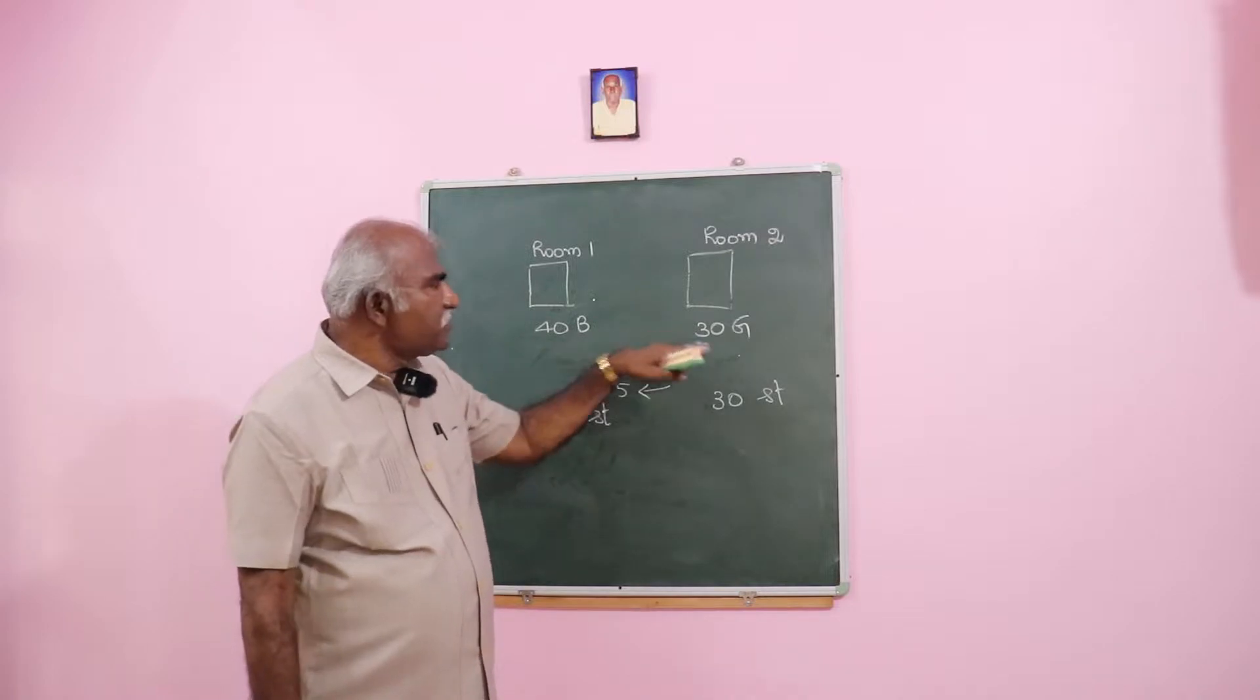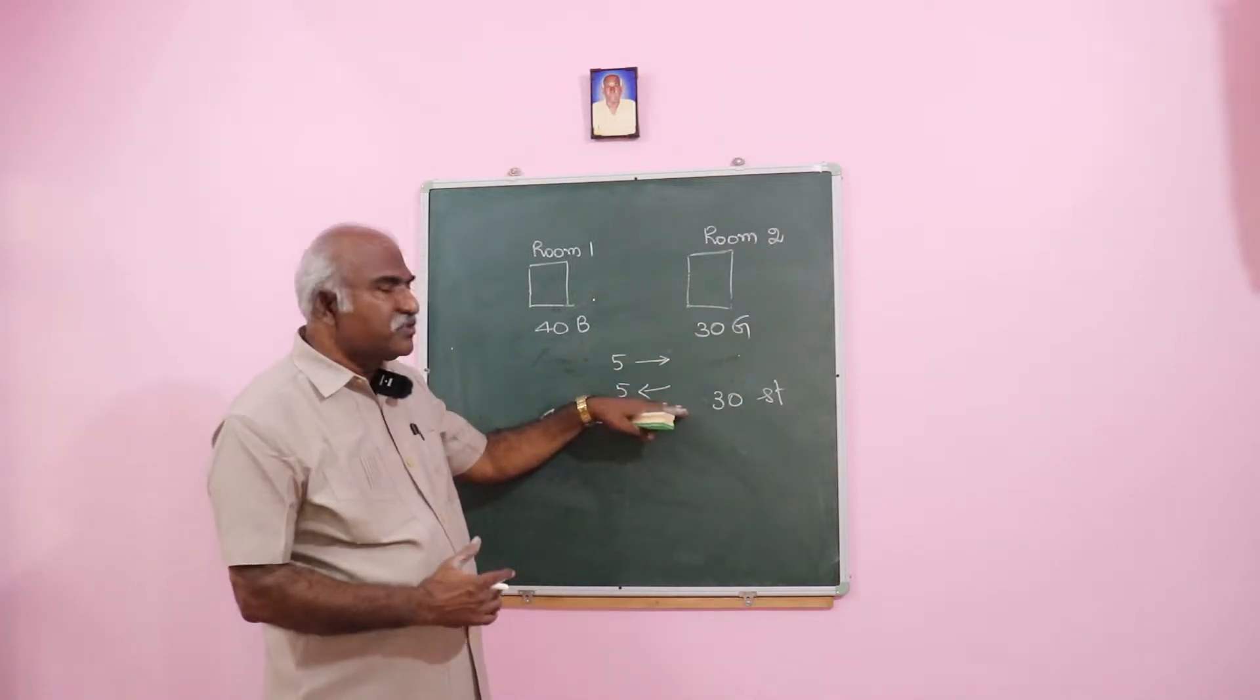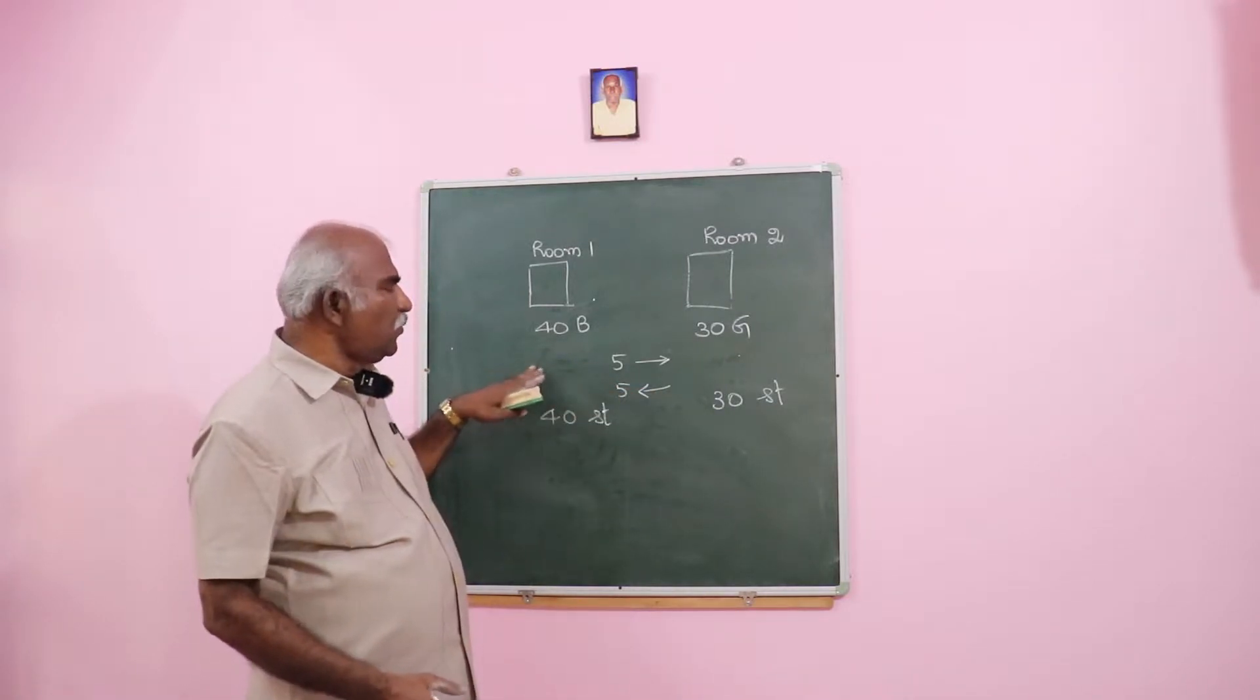In the beginning, five boys go to room two. Then five students, including boys and girls, come to room one.